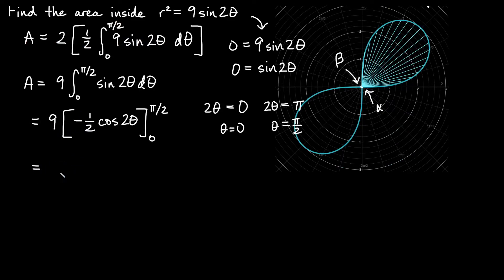Let's bump out the -½, giving us -9/2 times [cos(2θ)]. When θ = π/2, if I plug in π/2 and multiply by 2, that gives me π. So cos(π) = -1.